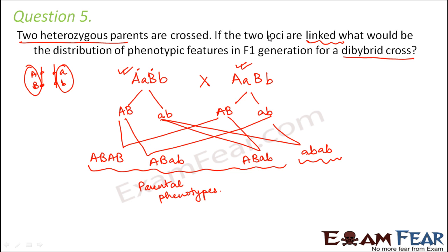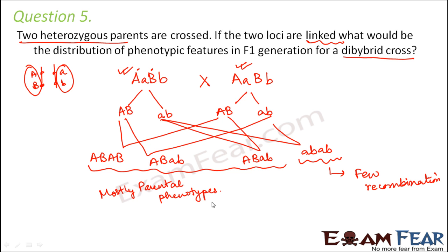Since the loci are linked but not completely linked, we observe mostly parental phenotypes with some recombinations. Had they been completely linked, all offspring would show parental phenotypes. Here, most are parental phenotypes but some are recombinations. The ratio of parental phenotypes to recombinants is approximately 3:1.